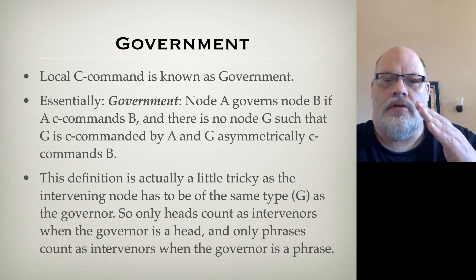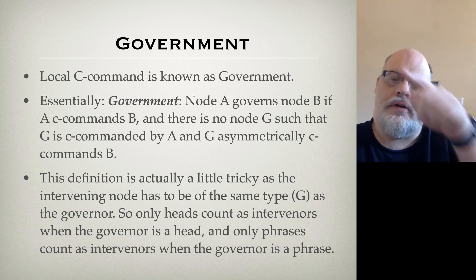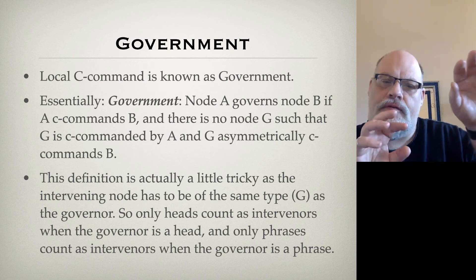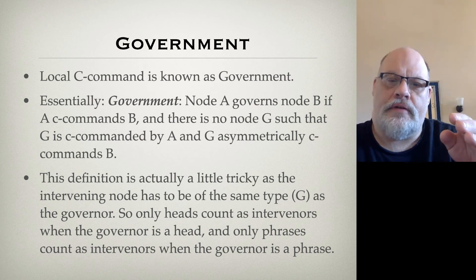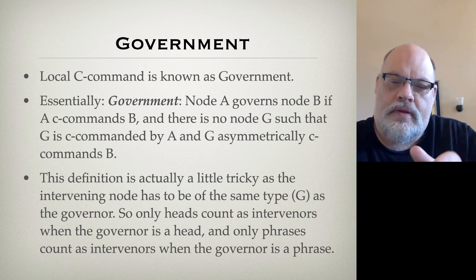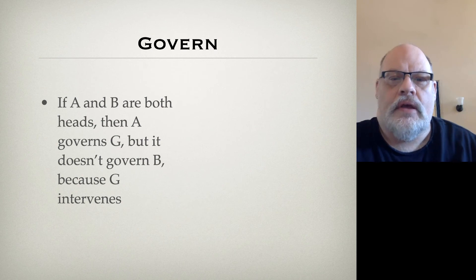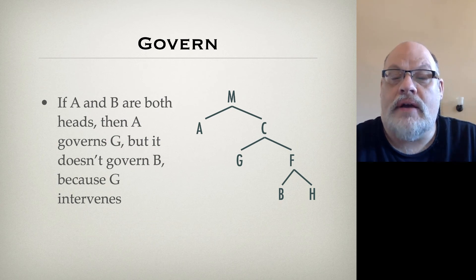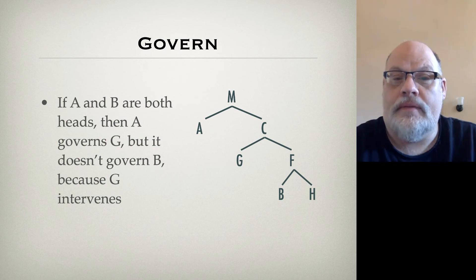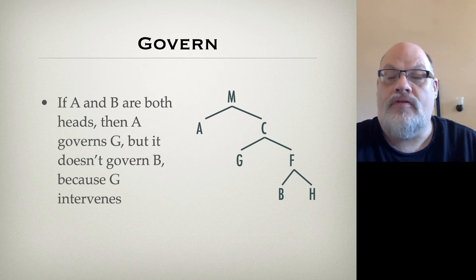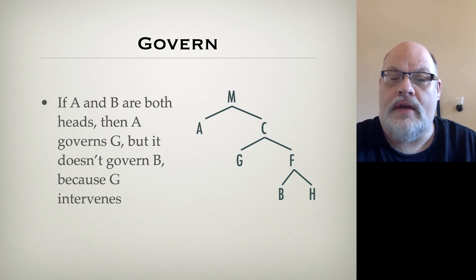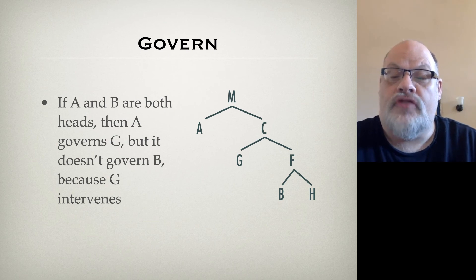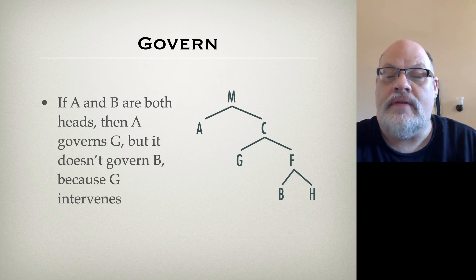For example, when you're looking at two heads, the intervener is another head. If you're looking at two phrases, then the intervener is another phrase. In our tree, A does not govern B because G intervenes — assuming that A, G, and B are all heads. So if A, G, and B are all heads, then A governs G, G governs B, but A does not govern B.